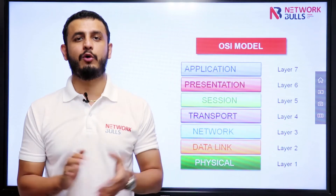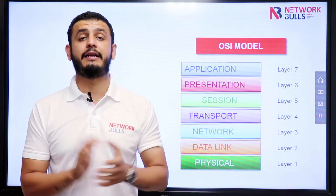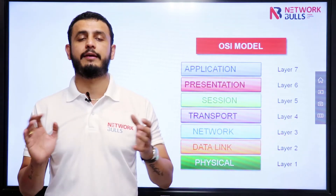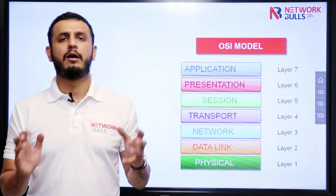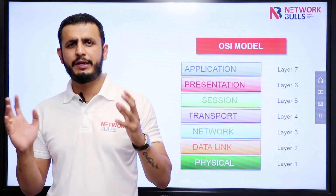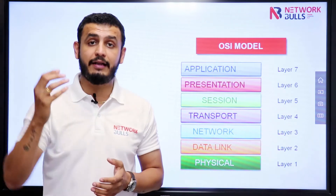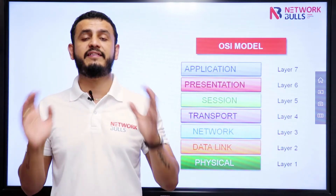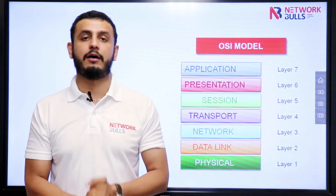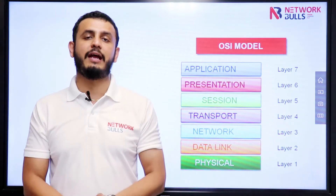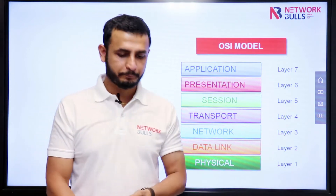Hello, in this video we will discuss Layer 7, the application layer of the OSI model. All of you remember what is the OSI model, why we need it, and that there are 7 layers in the OSI model. Now we will discuss the function of each layer one by one. Let's start with the application layer — what is the application layer?